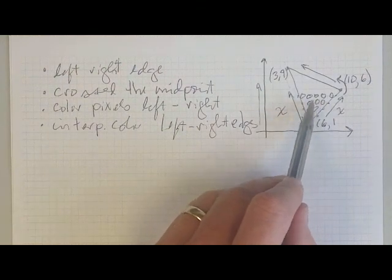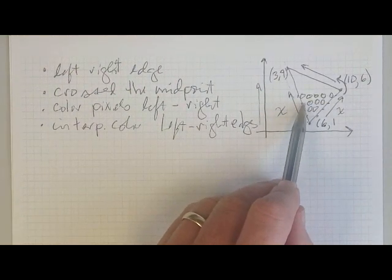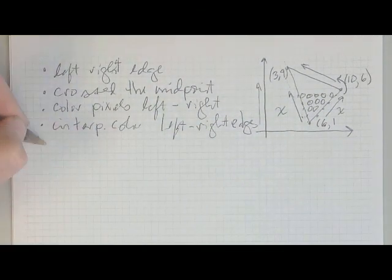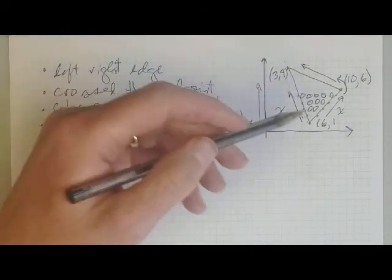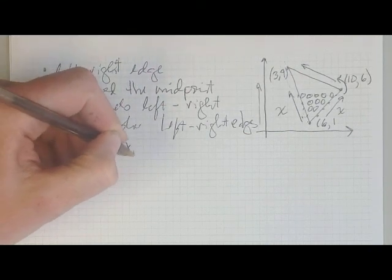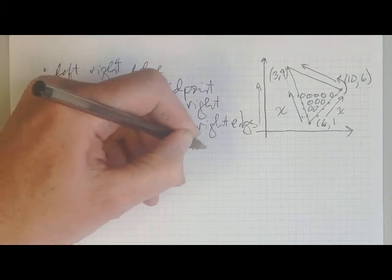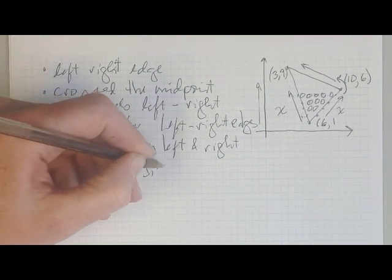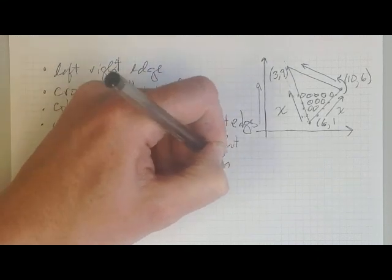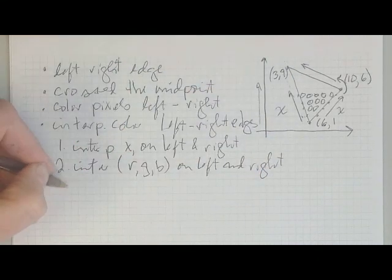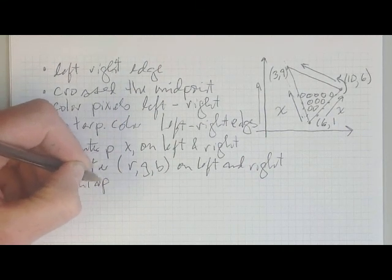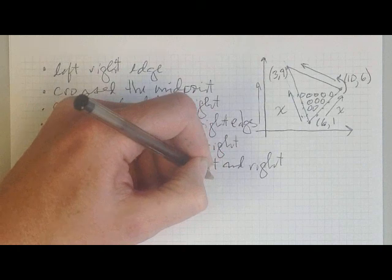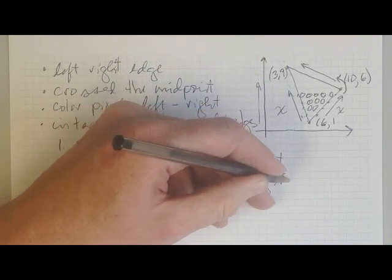Finally, when I know the color on the left and the right edge of the triangle, I need to interpolate the color on the left edge over to the color on the right edge — so I interpolate the color across the scan line. So if you look at what's being interpolated here, I'm actually interpolating several values: I'm interpolating x on the left and right, I'm interpolating red, green, and blue on the left and on the right, and then finally I'm going to interpolate red, green, and blue from the left to the right across the single scan line.